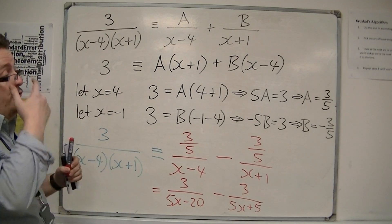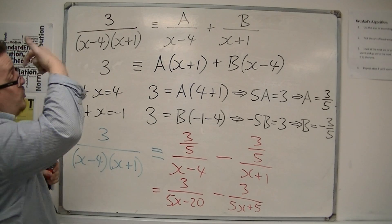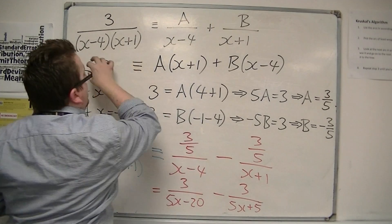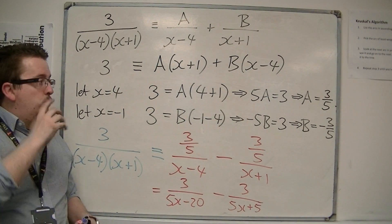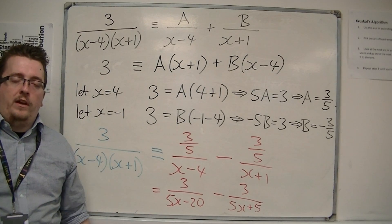So, this is the process of partial fractions. And make sure you can go from that line to that line. Because from there on, it's just substituting values in to work out what the missing letters are.